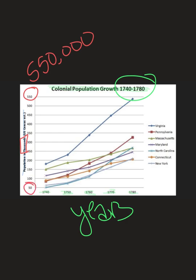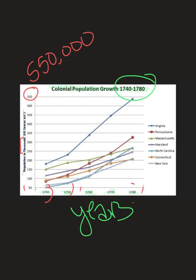So it starts at 50,000, 100,000, 150,000, all the way up to 550,000, and our increments here are 50s — 50, 100, 150, 200, easy. And for the years along the bottom, those look like 10-year increments: 1740, 1750, 1760, 1770, 1780. This is pretty easy to read. Now, what if I was looking for some information? Let's try to ask a question — what was the population of Massachusetts in 1770?